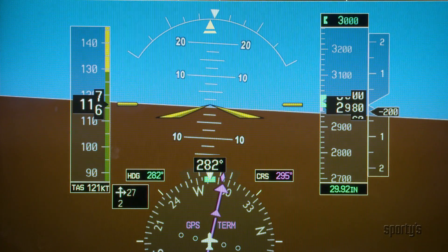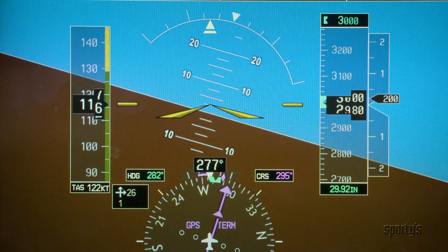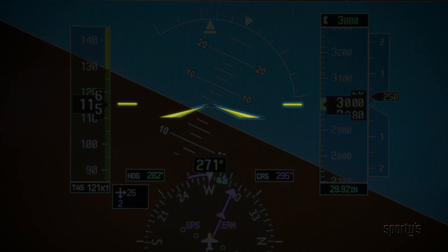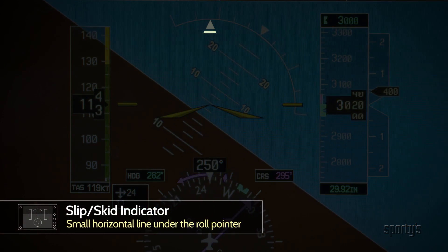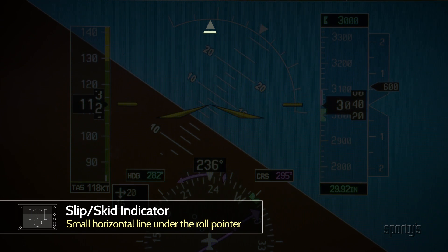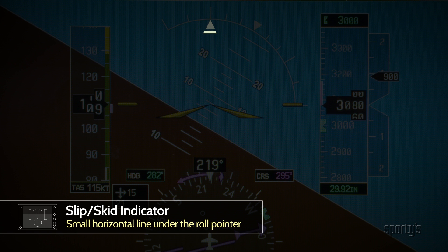Notice that the entire PFD background — the earth, horizon, and sky — moves. The yellow airplane symbol remains stationary. The slip and skid indicator is a small horizontal line located under the triangle roll pointer. It is, at first, hard to recognize, and its small size is sometimes a challenge for the newly initiated. It works the same, however, as the standard inclinometer. Step on the line instead of the ball.